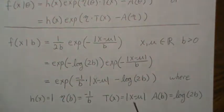The sufficient statistic is the absolute value of x minus mu, and the log partition is log of 2b.